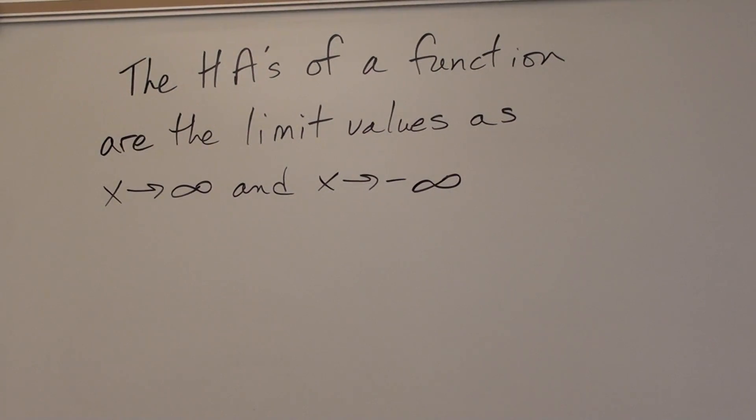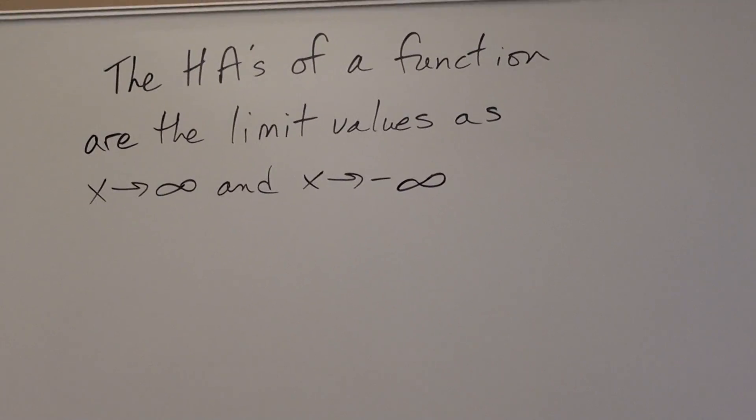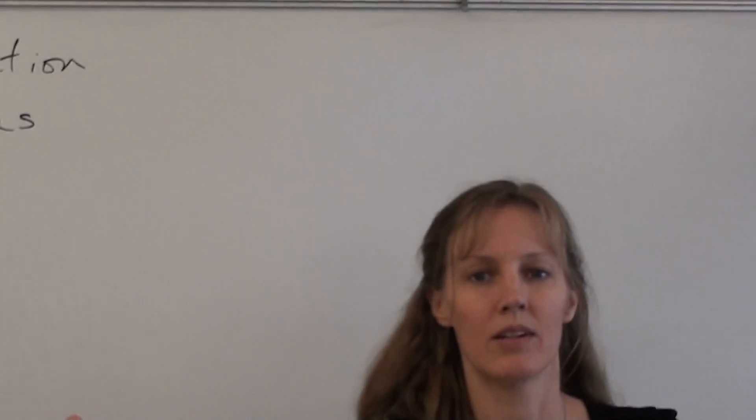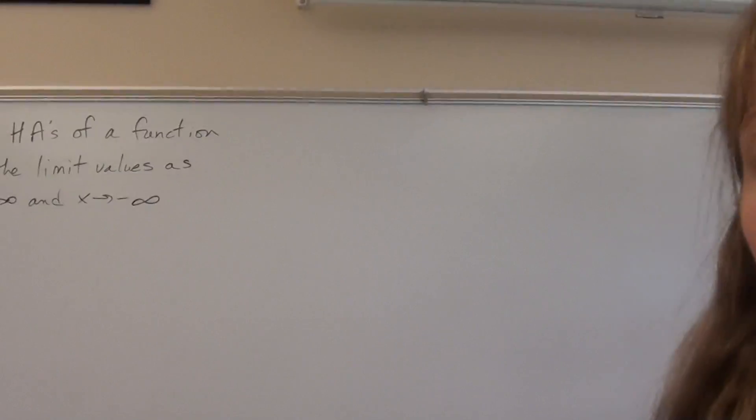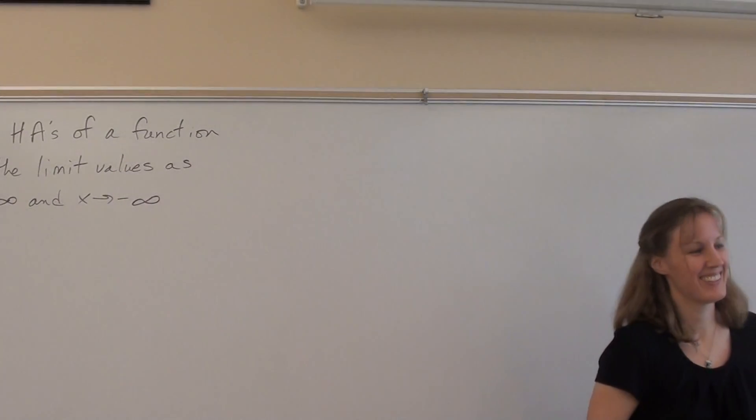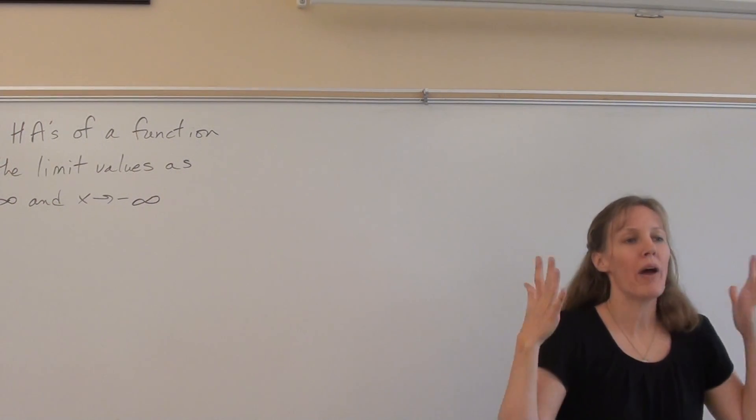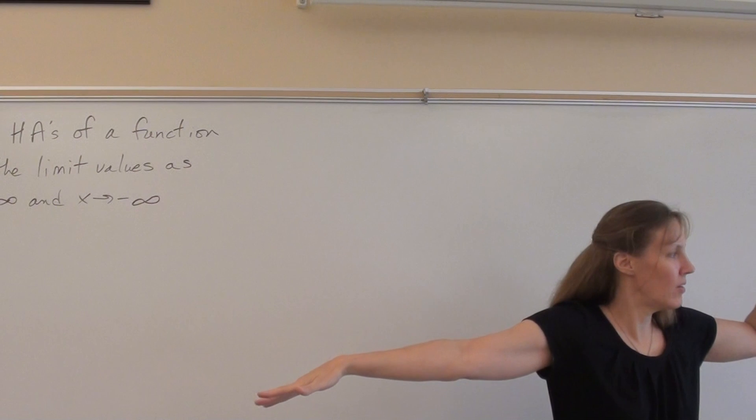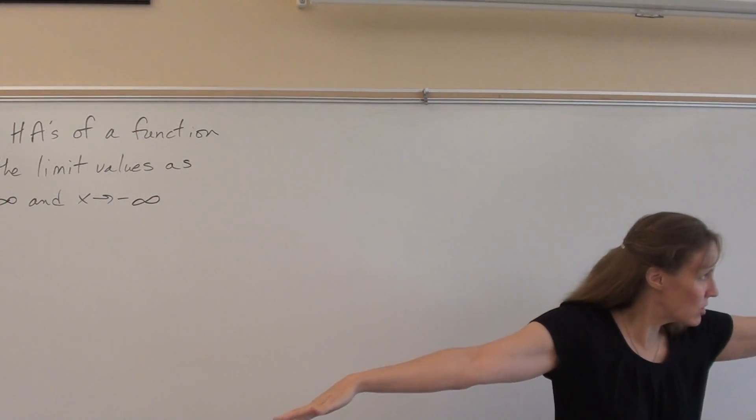The horizontal asymptotes of a function are the limit values as x approaches infinity and negative infinity. Horizontal asymptotes are not electric fences. Horizontal asymptotes are descriptions of end behavior. So here's the thing. When you have a function, the end behavior, if the y values flatten out towards one specific value,